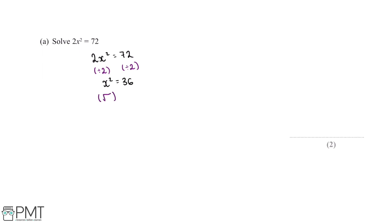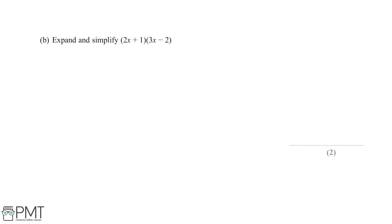The final thing we'll want to do is square root both sides of this equation. On the left side we'll just be left with x, since the square root of x squared gives us x. The square root of 36 gives us plus or minus 6. This plus or minus is easy to forget, but it's important — it's worth one mark. So our final answer is plus or minus 6: one mark for the plus or minus and one mark for the six.